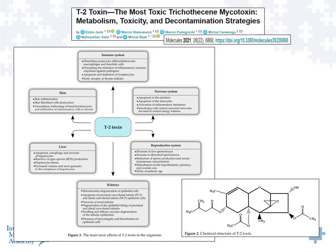T2 toxin is an extremely toxic form of a trichothecine. It has adverse effects within the nervous system — it can cause apoptosis of the pituitary or damage astrocytes, which are important for maintaining proper levels of glutamic acid in the synapse. Too much glutamate can cause overstimulation of neurons. In the liver, trichothecines can trigger apoptosis and reactive oxygen species damage, leading to mitochondrial problems. The immune system, kidneys, skin, and reproductive system can all become damaged by T2, and this applies to all trichothecines, but particularly T2.